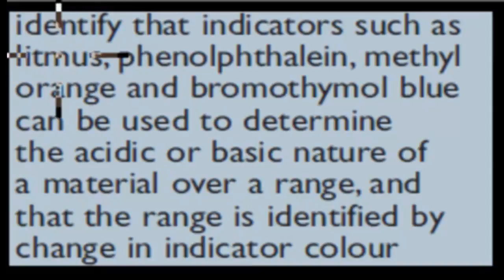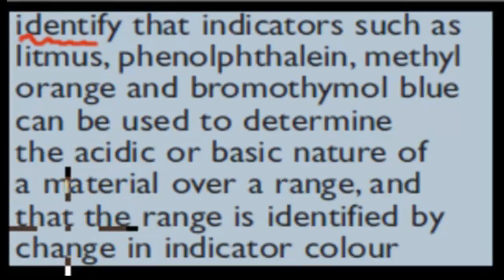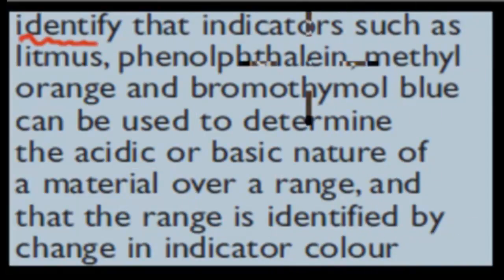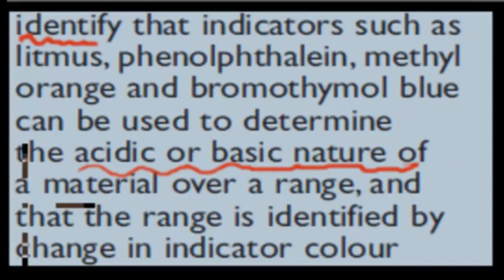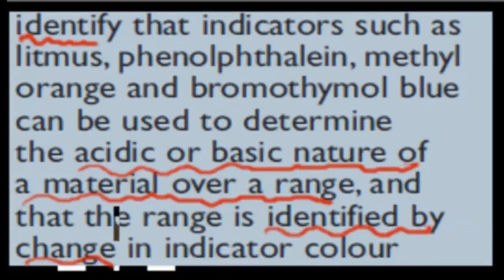The dot point says: identify that indicators such as litmus, phenolphthalein, methyl orange, and bromothymol blue can be used to determine the acidic or basic nature of a material or a range, and that range is identified by a change in indicator color. We need to identify that these indicators are important, and that they can be used to determine the acidic or basic nature of a material, so we can find out if a substance is a base, neutral, or acidic using these indicators.